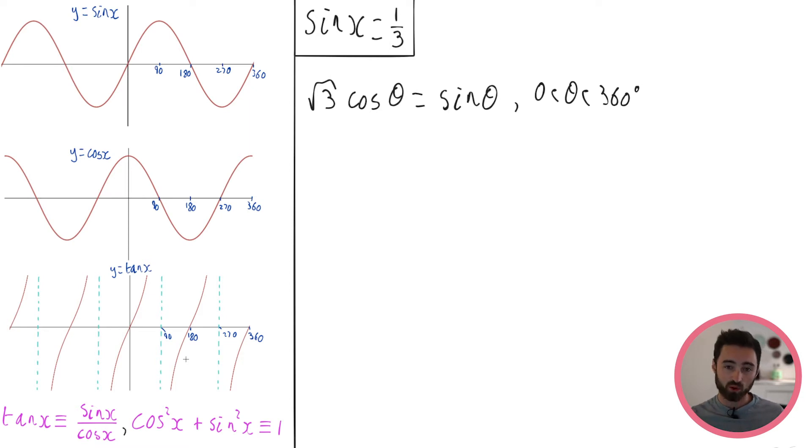The next two things that I want you to know are identities. An identity is an equation that is true for every value of x. So it doesn't matter what x is. Tan x is always the same as sine x over cos x. And cos squared plus sine squared is always equal to one. We're going to use these in a second.